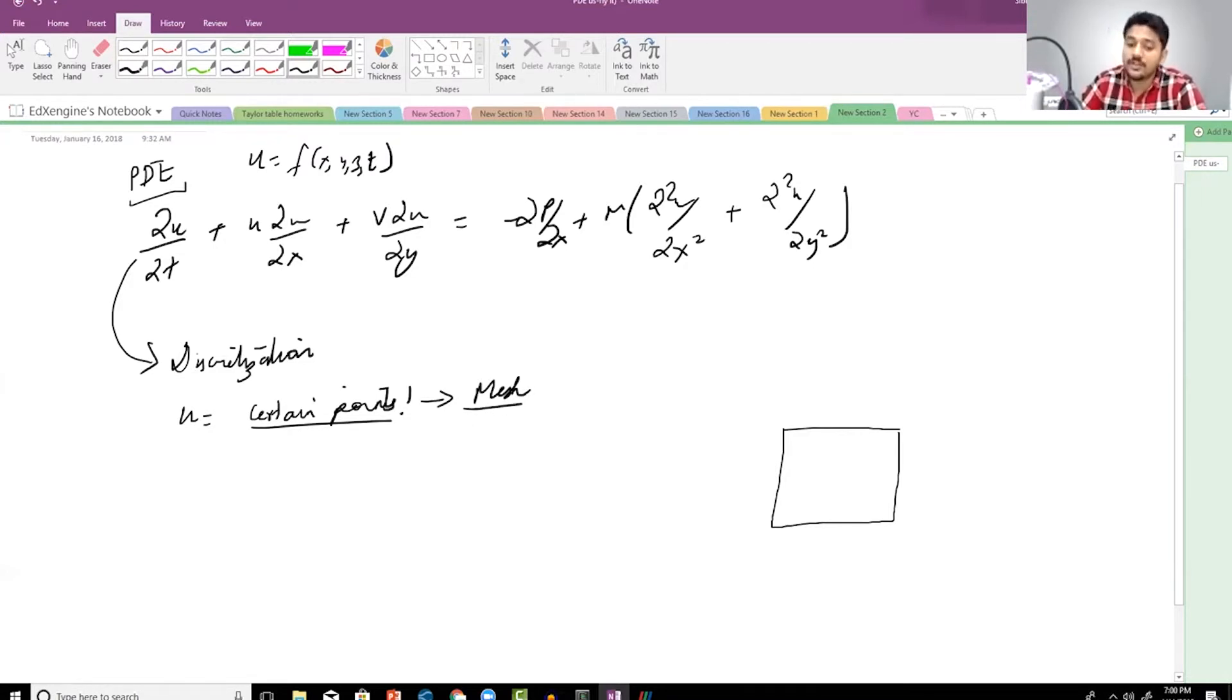These certain points is what you call a mesh. You might have heard of people saying computational mesh. Well that is basically a space or domain in which this partial differential equation is being solved. The concept is actually quite simple.